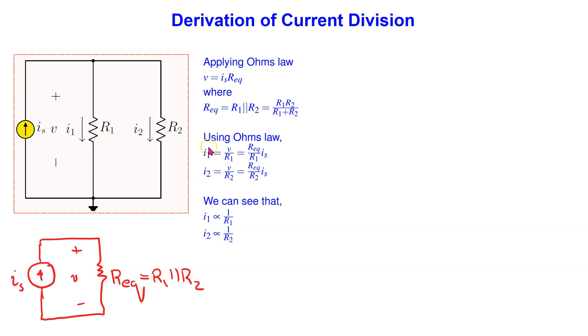we can apply Ohm's law to the resistors R1 and R2 and substitute the value of V to obtain I1 and I2 as shown.